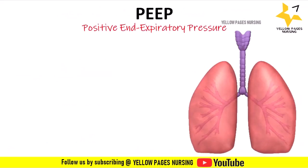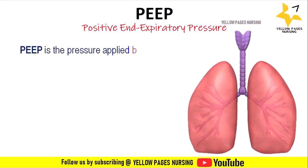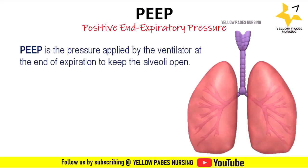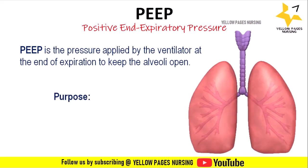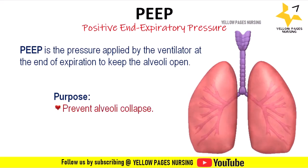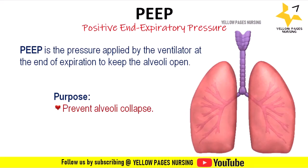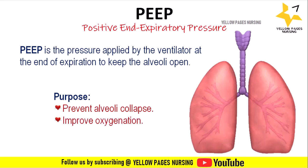Positive End-Expiratory Pressure (PEEP) is the pressure applied by the ventilator at the end of expiration to keep the alveoli open. The main purposes of PEEP are: first, preventing alveolar collapse — PEEP keeps the tiny air sacs open at the end of exhalation to ensure continuous gas exchange; and second, improving oxygenation.